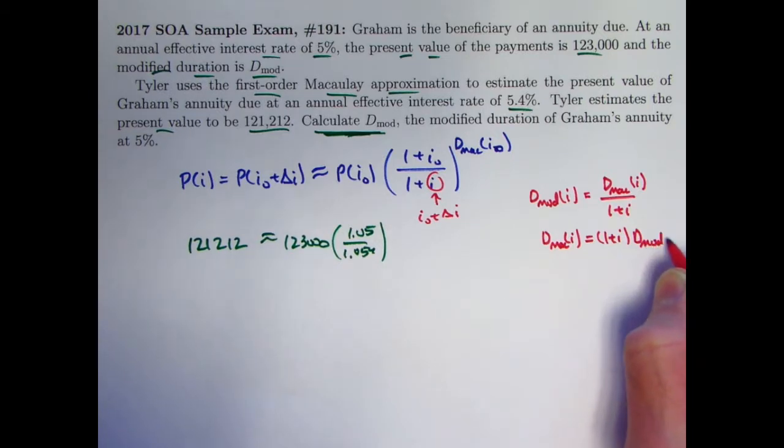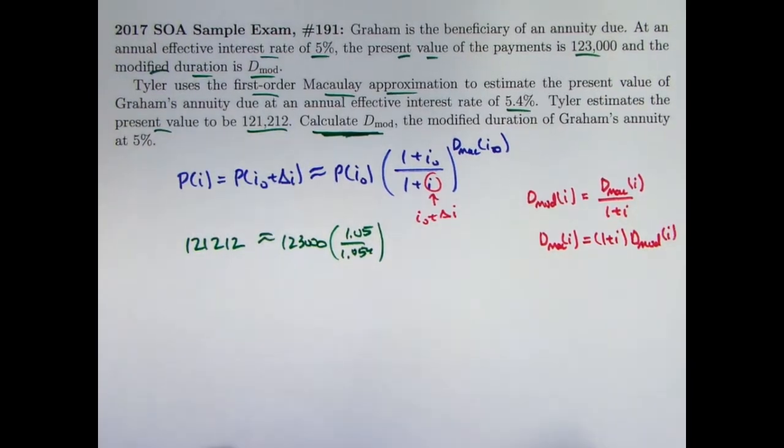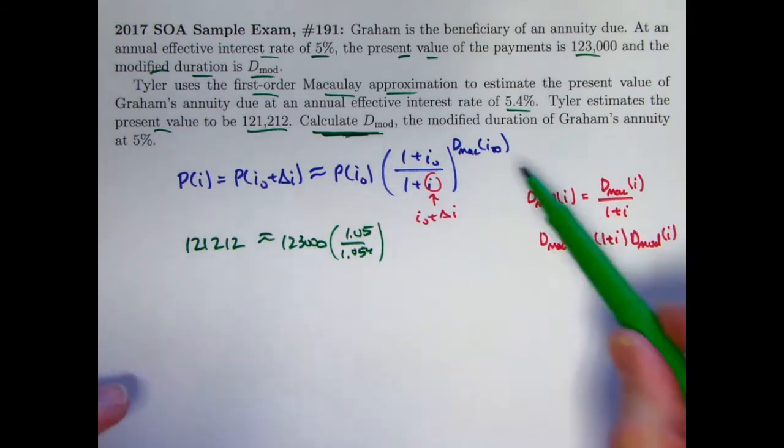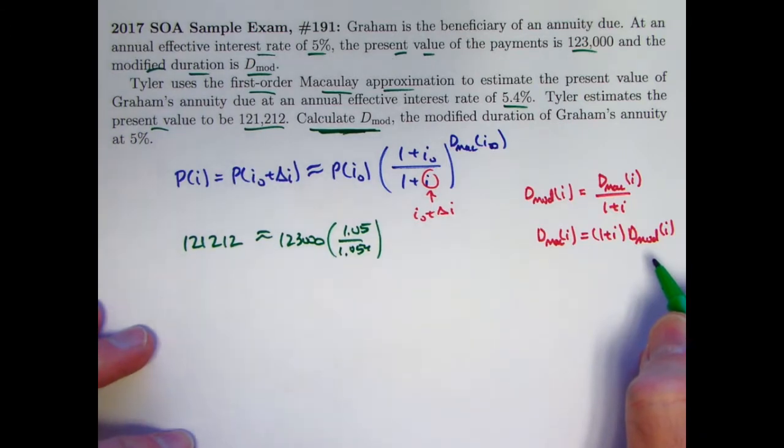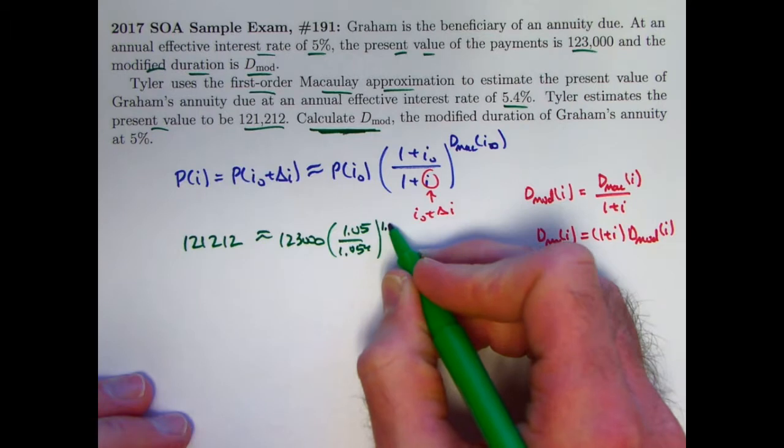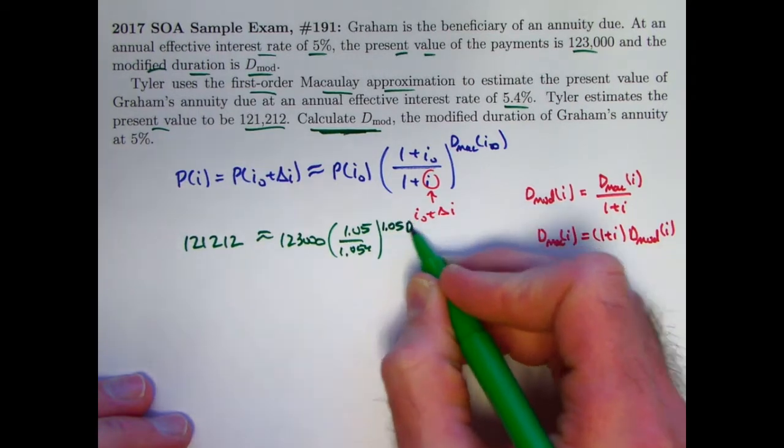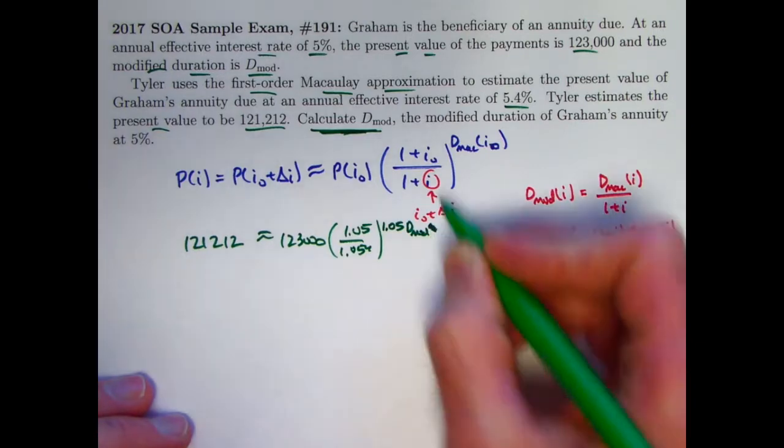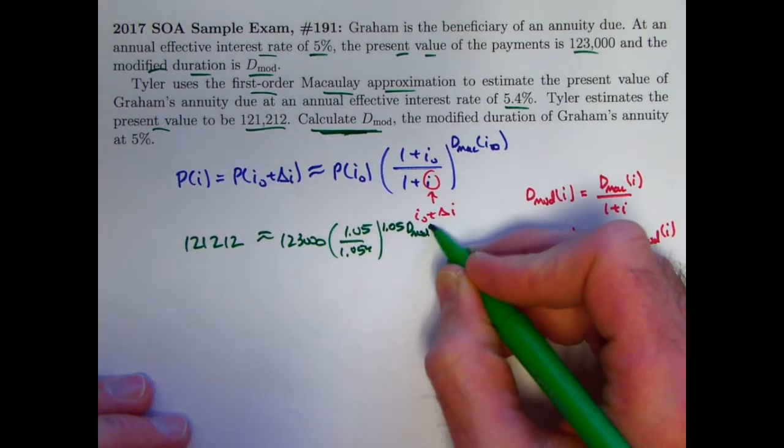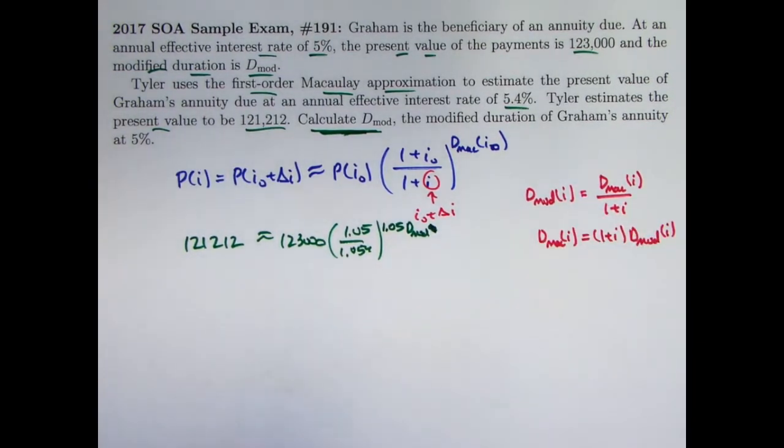And so, in the first order Macaulay approximation, I need to replace dmac of i0 by not the modified duration divided by 1.05, but instead the modified duration times 1.05. 1.05 times the modified duration. I'll just write dmod like I have up there. Okay, don't divide by 1.05, multiply by 1.05.